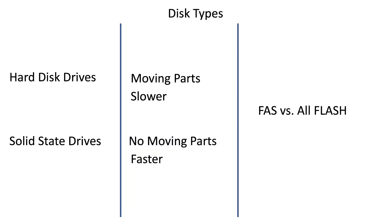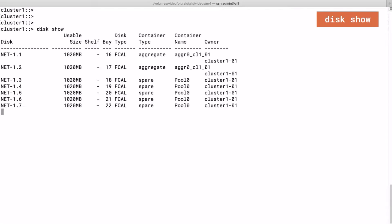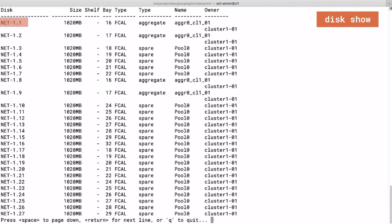To list the disks of a controller you can run the command disk show. Among other things this will list the name of every disk and the type of the disk. Also it will list the owner of the disk. A disk can be owned by one of the two controllers in an HA pair, but we will take a look at that later.